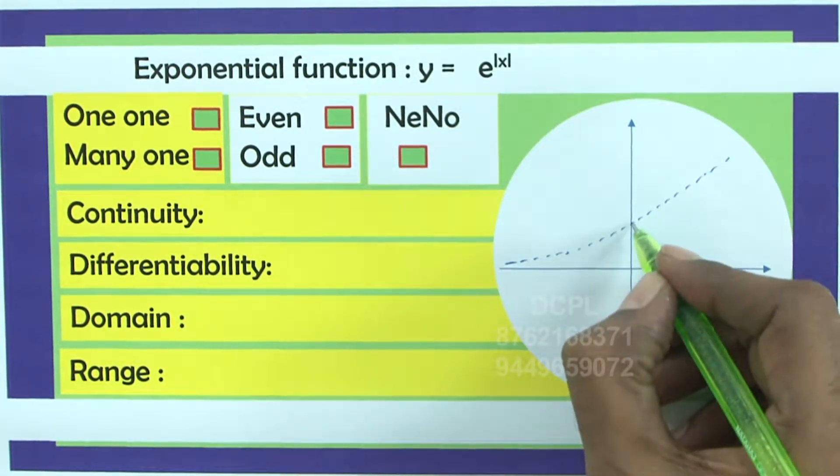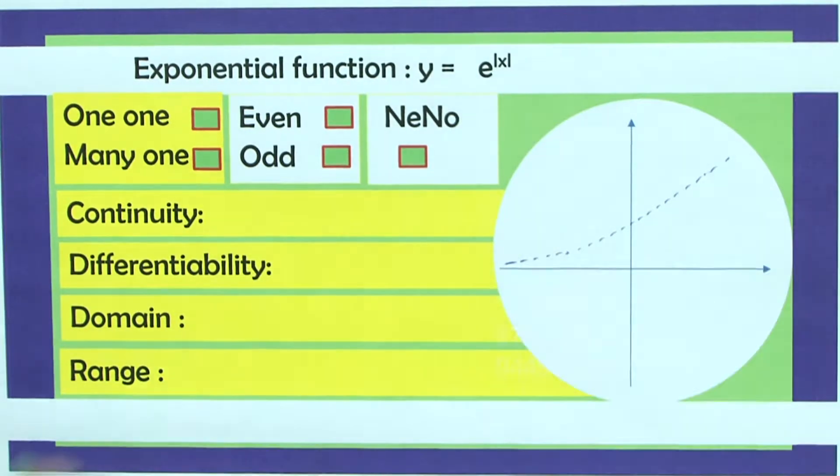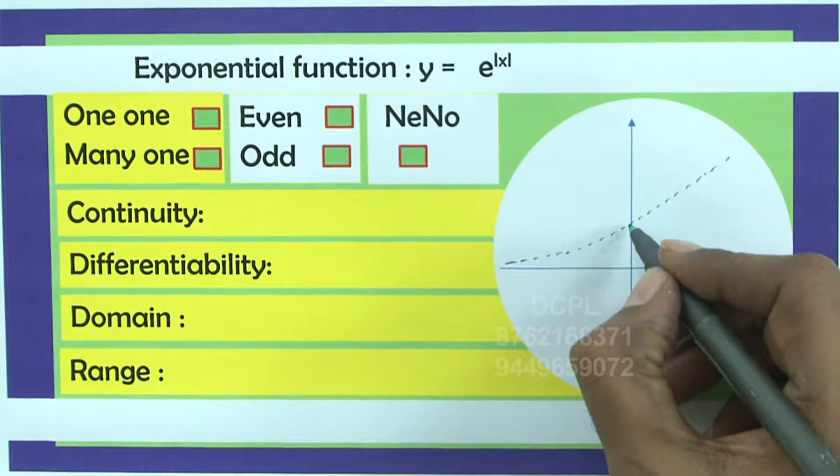Retain the part of the graph whatever you have towards the right side of y axis, that is this part of the graph.